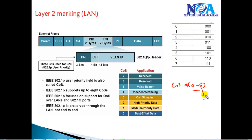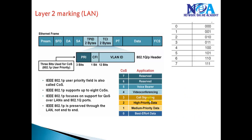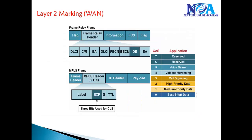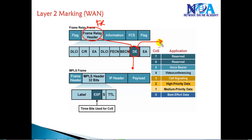Five represents very high priority traffic and zero represents the lowest priority. For Frame Relay-based networks, the Frame Relay header has a Discard Eligibility (DE) bit that defines the priority of traffic. For MPLS frames, the MPLS header contains Experimental (EXP) bits, which are again three bits, giving the same range of values as Class of Service.